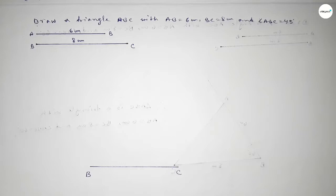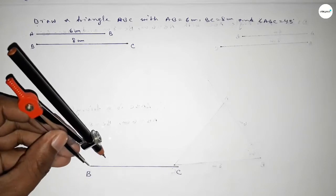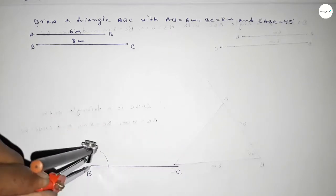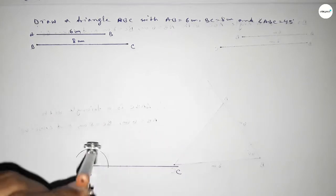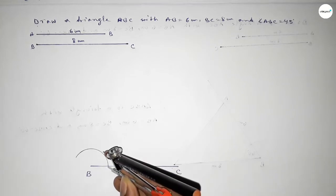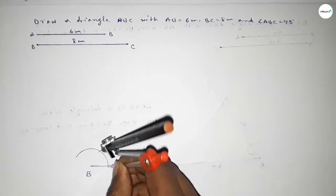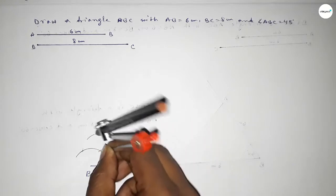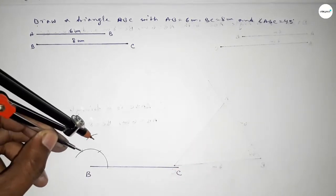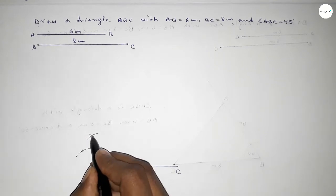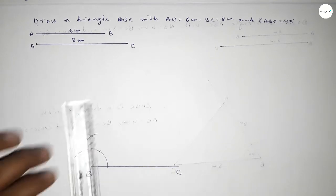Now we have to draw a 45 degree angle on point B. First, drawing a 90 degree angle on point B — taking any length and drawing an arc, then with the same length putting the compass and cutting here, and putting the compass again and cutting here, and drawing another arc with same length and cutting here so both curves intersect at a point.